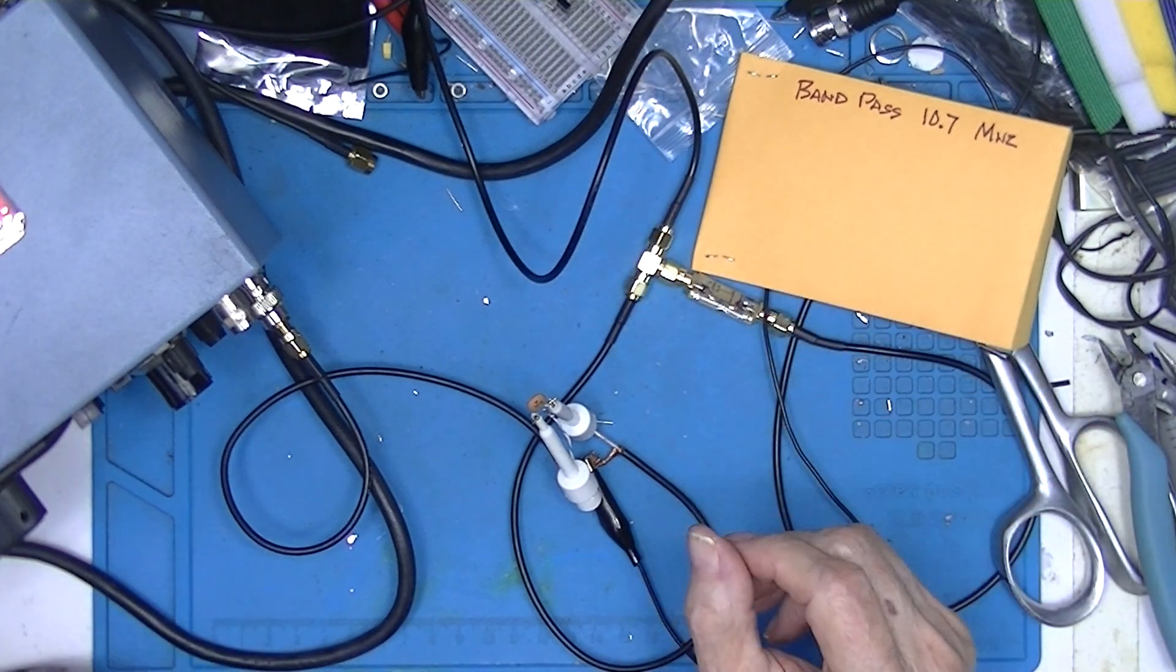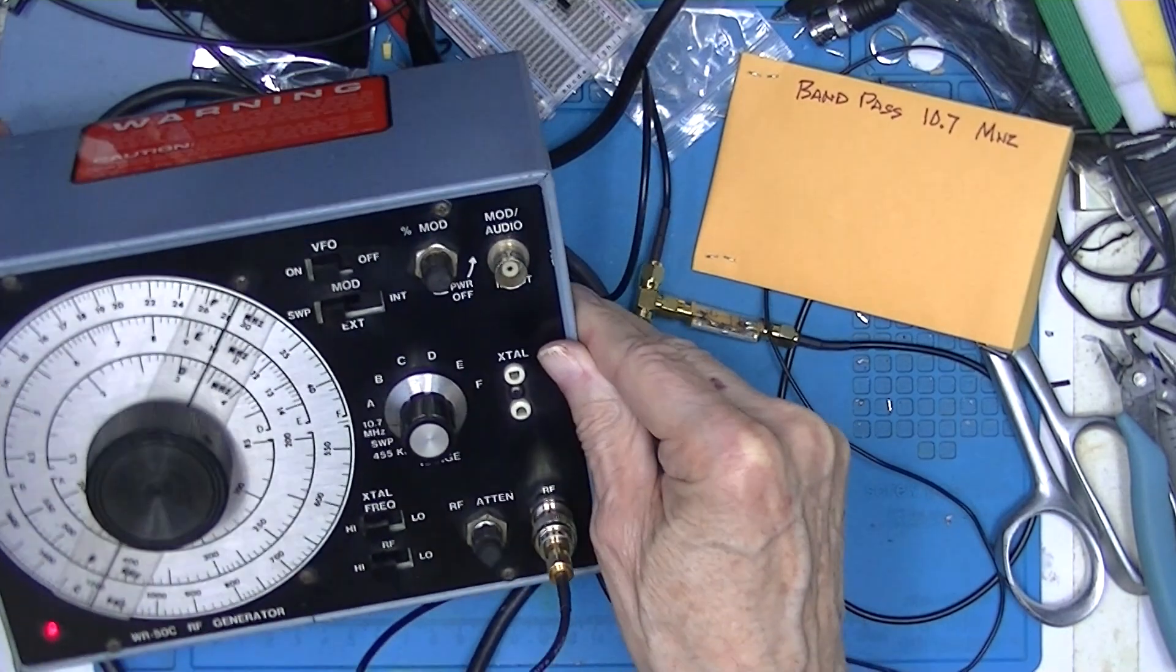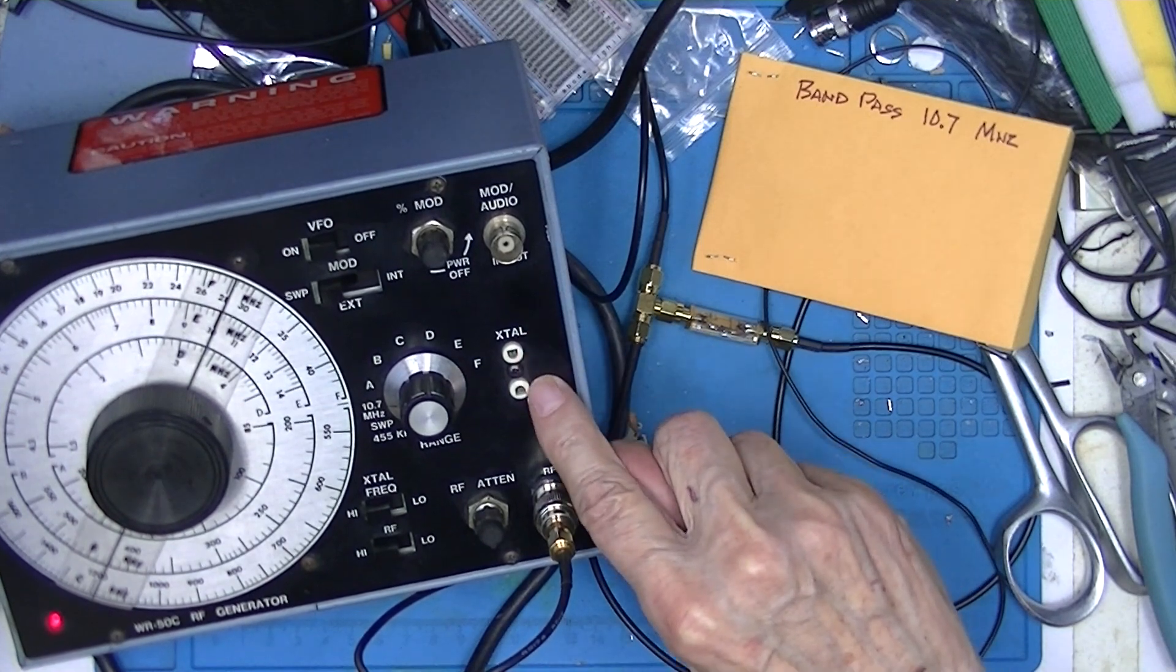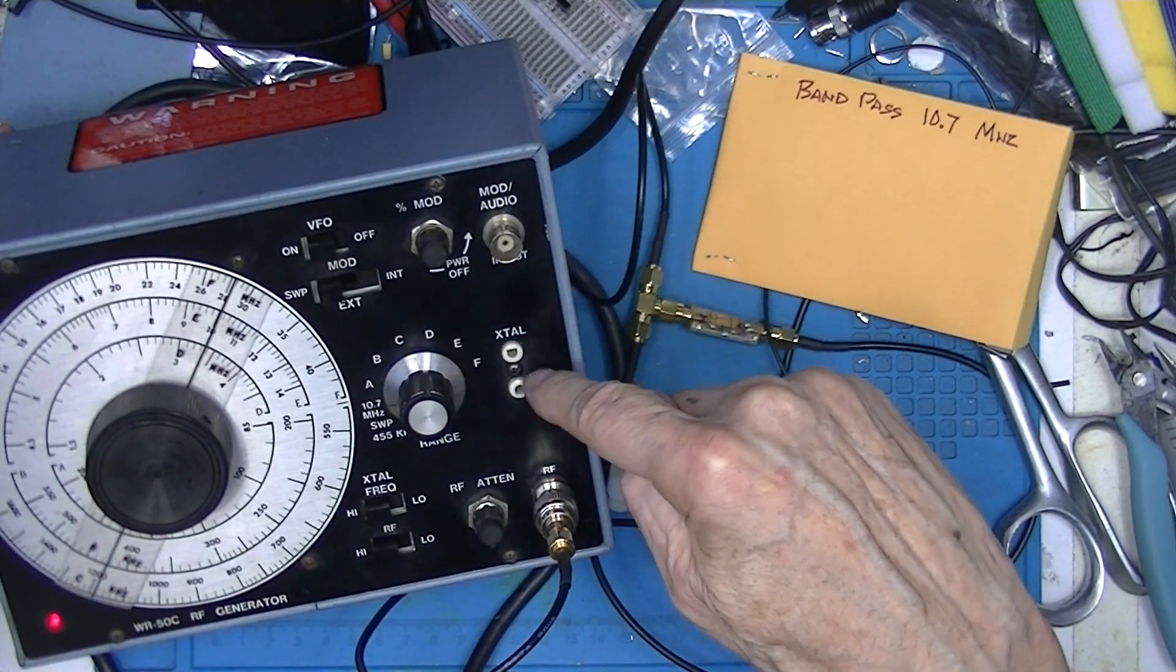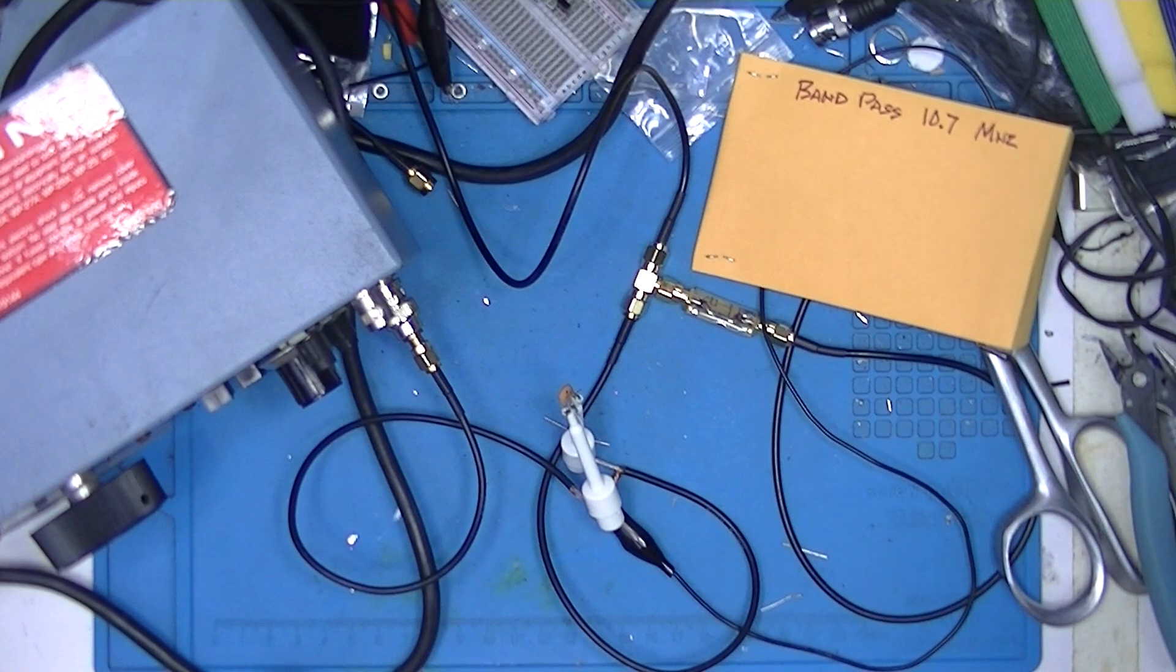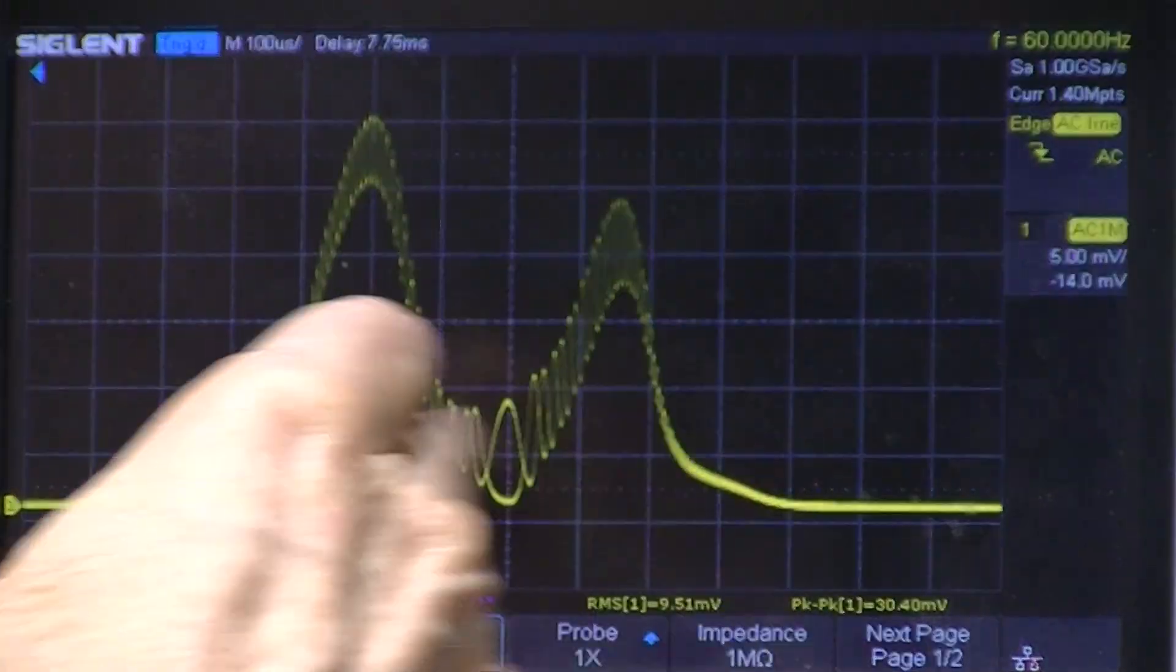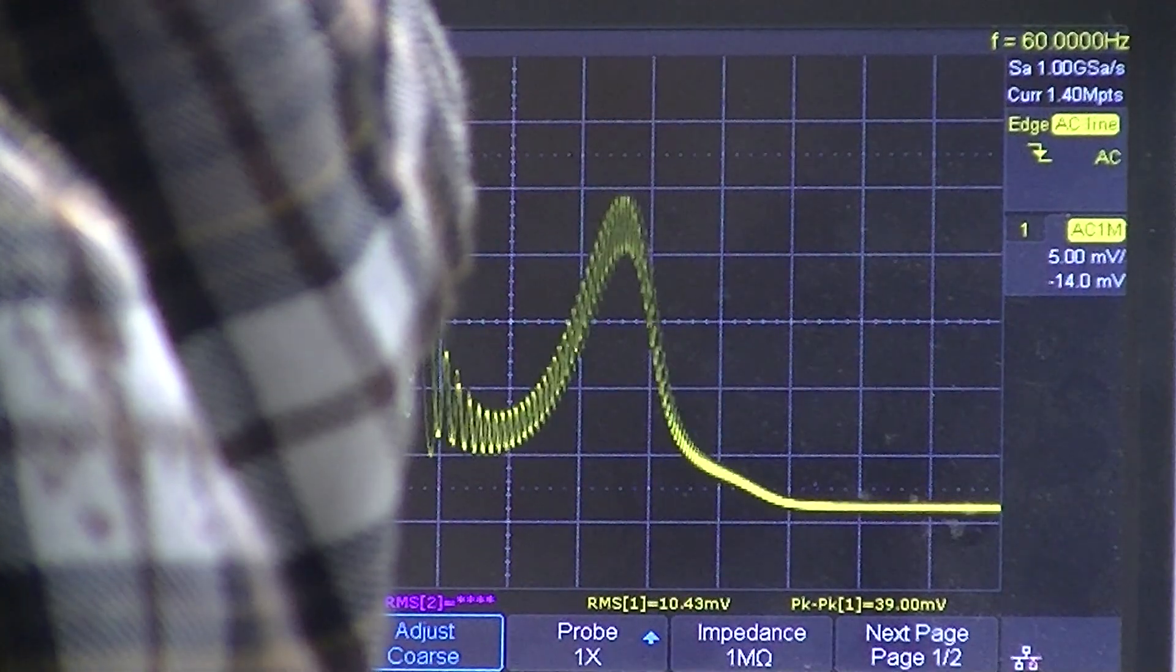Now I've elected to use a manually variable marker generator. RCA, the designer of this, elected to use a crystal at 455 or 10.7 megahertz. So with a fixed marker generator you only got, well, one marker. With a variable marker generator, you can get variable markers up and down the band here. So you can actually tell how wide or what the response is of the device or the amplifier under test.